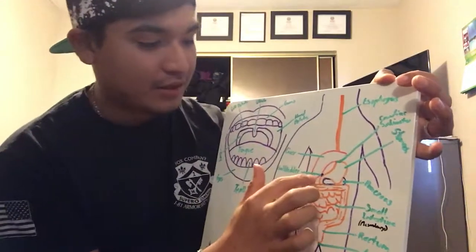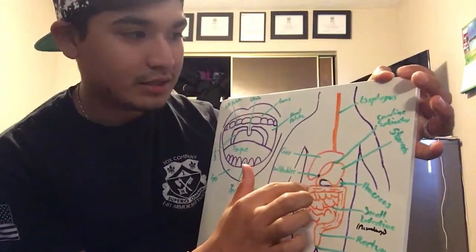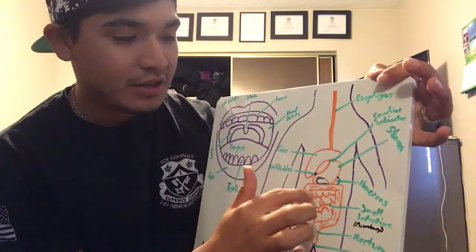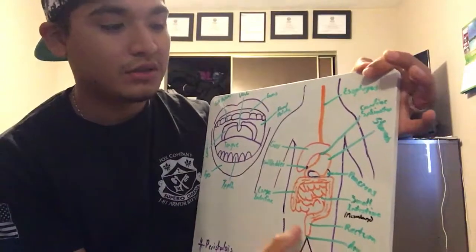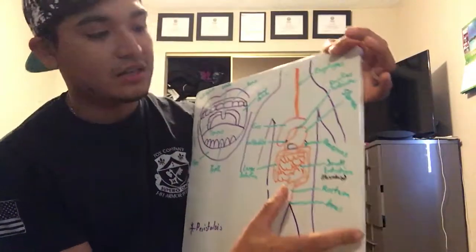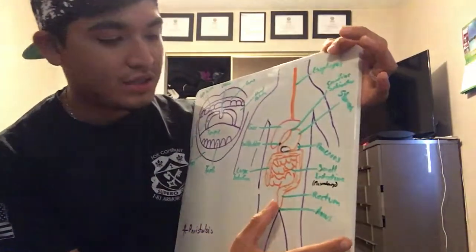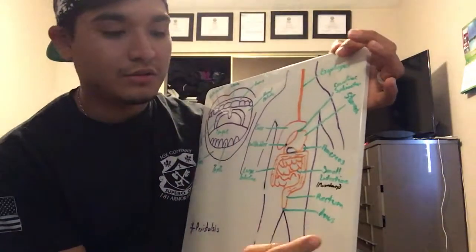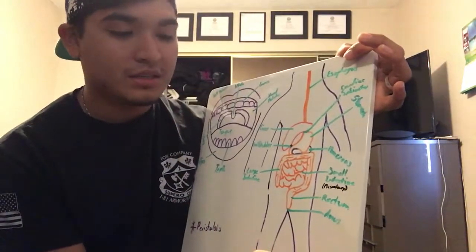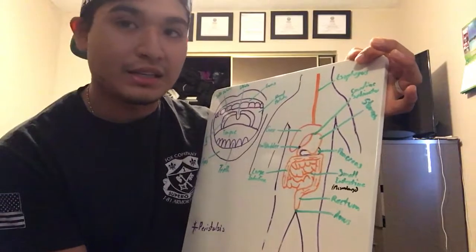It then goes to the pyloric sphincter, which is the entrance of the small intestine. In the small intestine you have the duodenum, the jejunum, and the ileum.